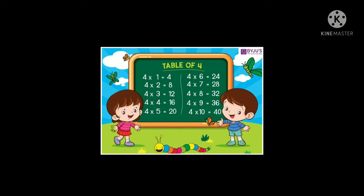Let's start. 4 1's are 4, 4 2's are 8, 4 3's are 12, 4 4's are 16, 4 5's are 20.